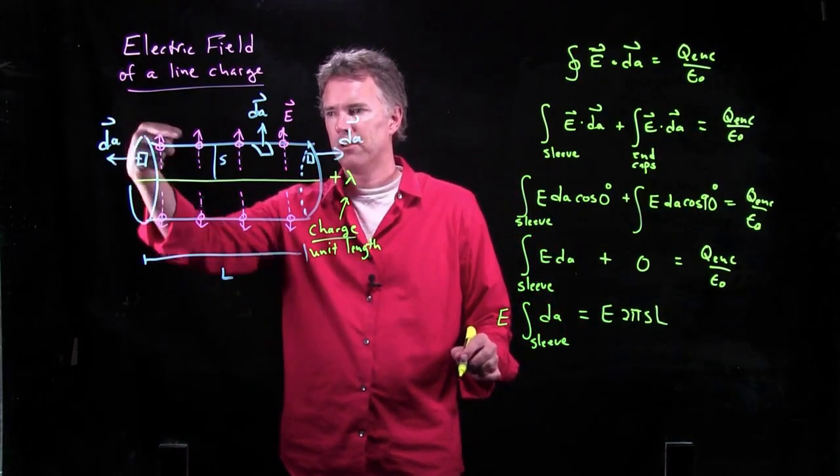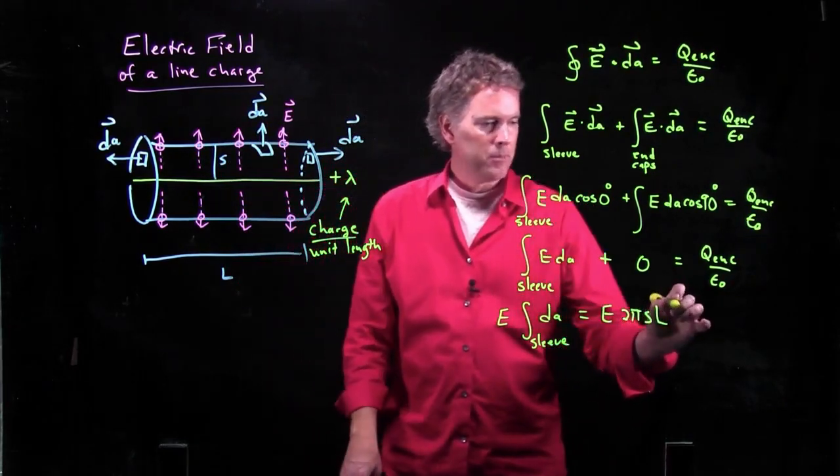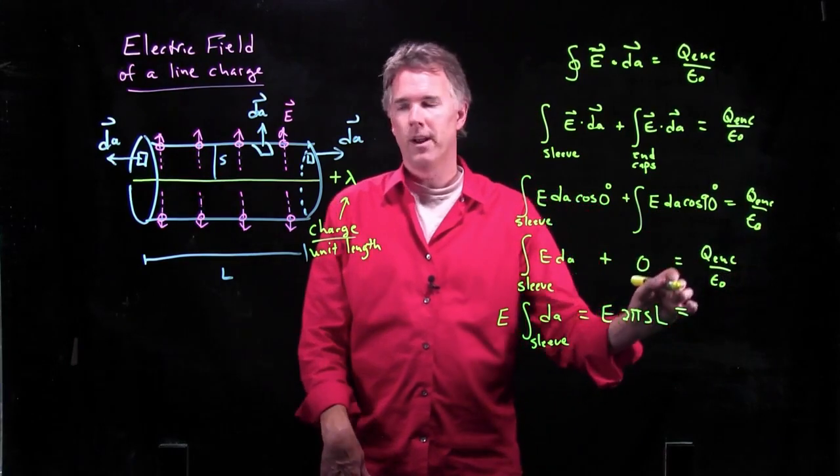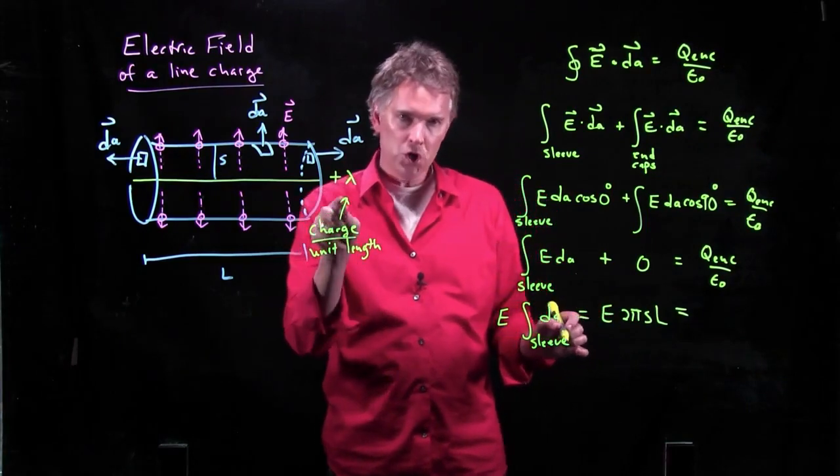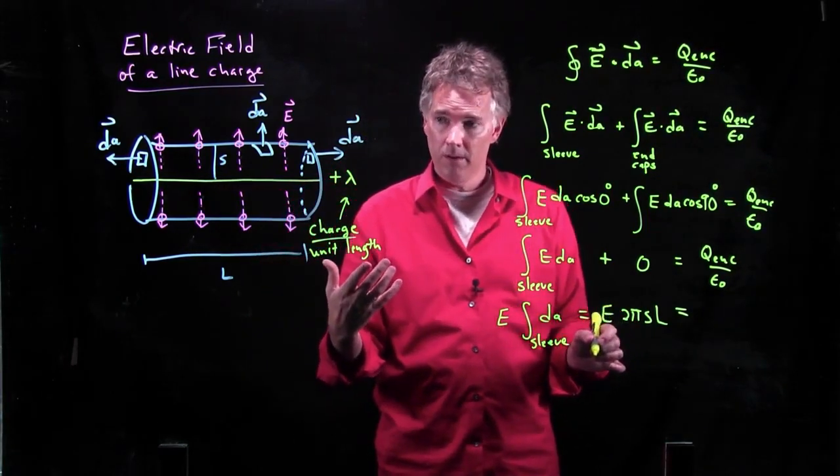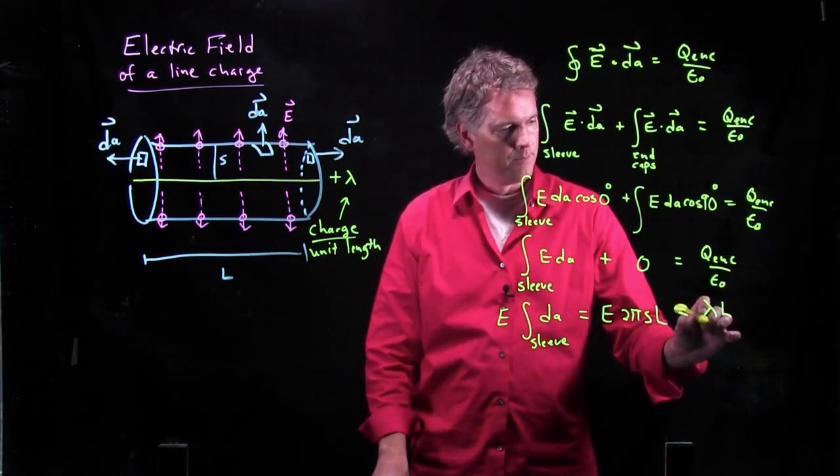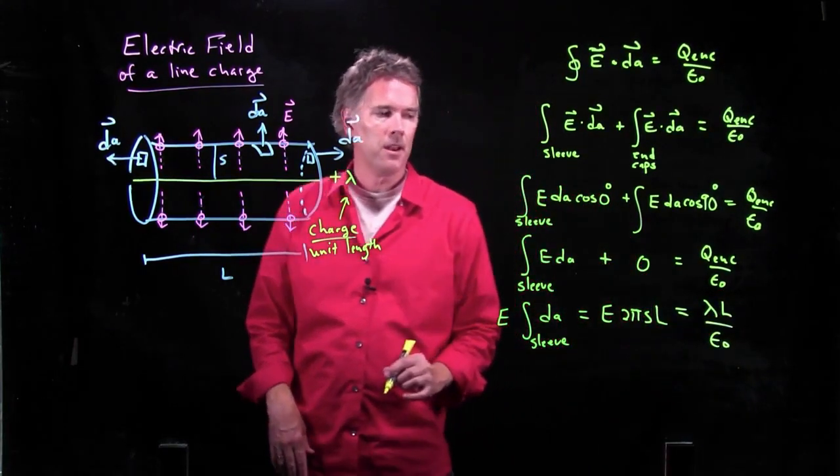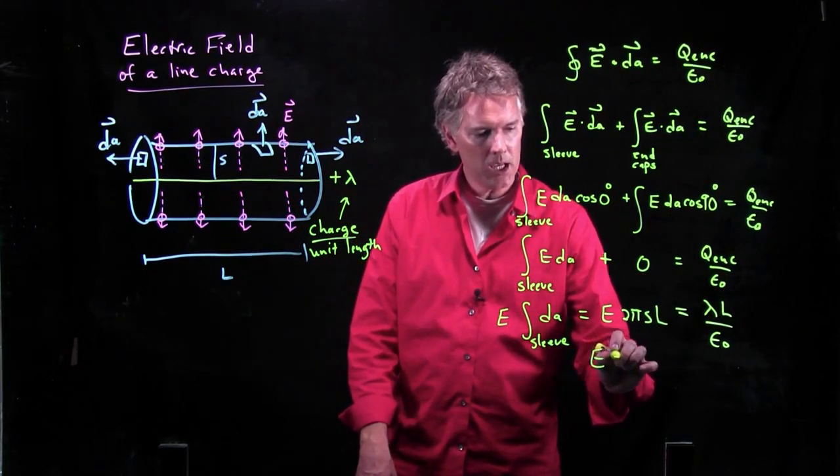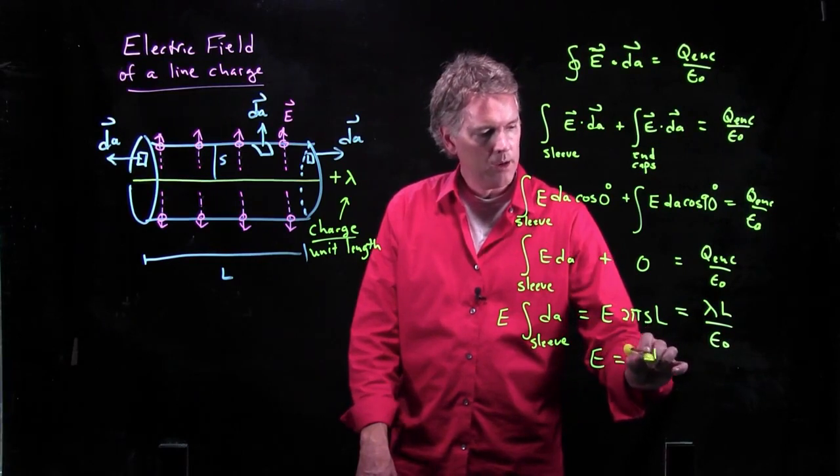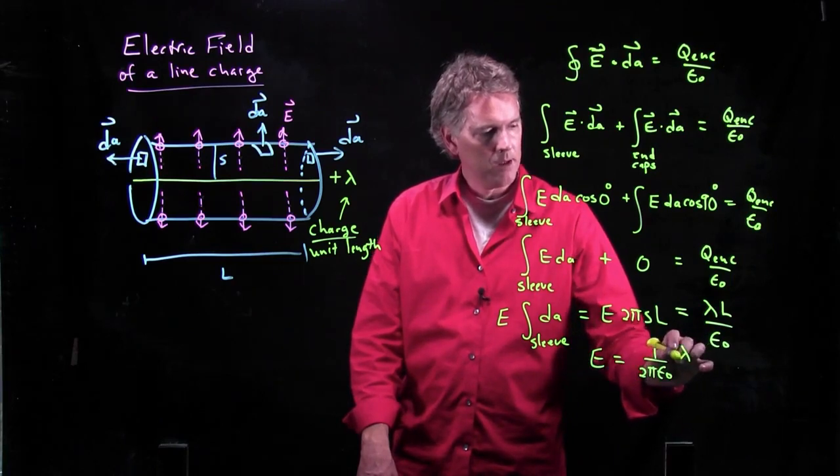All of that has to be equal to Q enclosed over epsilon naught. But Q enclosed is related to this lambda, of course, because this was charge per unit length. So how much total charge is in there? It is just lambda times how long the wire is, L. And then we're still dividing by epsilon naught. And now this is really cool, right? Because the L's cancel out. And look what we get. We get E is equal to 1 over 2 pi epsilon naught times lambda over S.